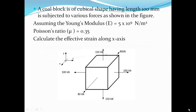Let's discuss the first numerical problem. A coal block of cubic shape has a length of 100 mm. It is subjected to various forces as shown in the figure. Young's modulus E is given as 5×10⁹ N/m², and Poisson's ratio μ is 0.35. We need to calculate the effective strain along the x-axis.